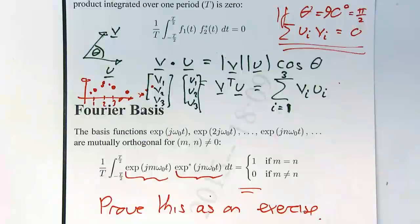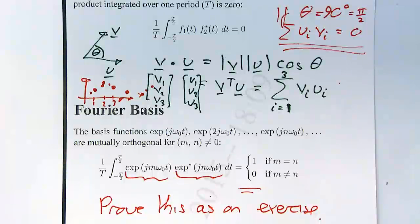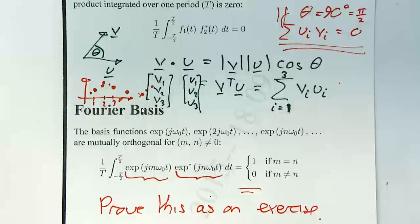If m and n are equal, then what you're doing is multiplying the same waveform by itself, and of course you can always represent a waveform in terms of itself — that's by definition. So when m is equal to n, the result equals one.